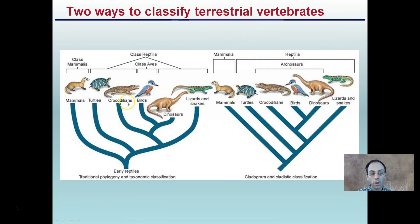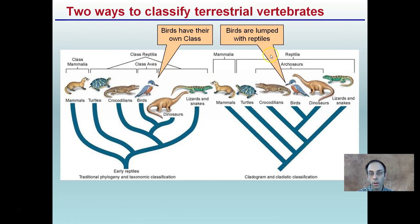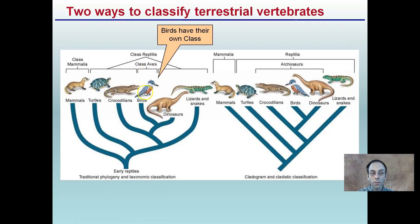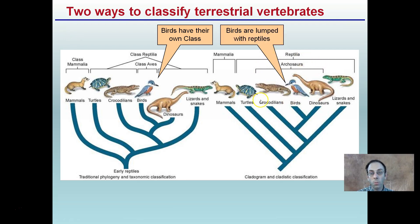There are two ways to classify terrestrial vertebrates. Notice that in one approach, birds have their own class, while in the other, birds are lumped with reptiles. The traditional phylogenetic taxonomic classification uses a lot of information to separate birds into their own category, but when looking at comparative features only, birds get lumped more with reptiles. This highlights the limitations of how we organize things — it's simply based on the information we're able to collect and use.